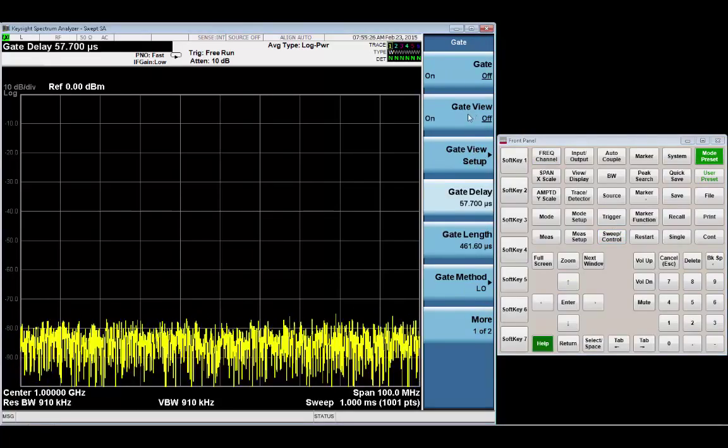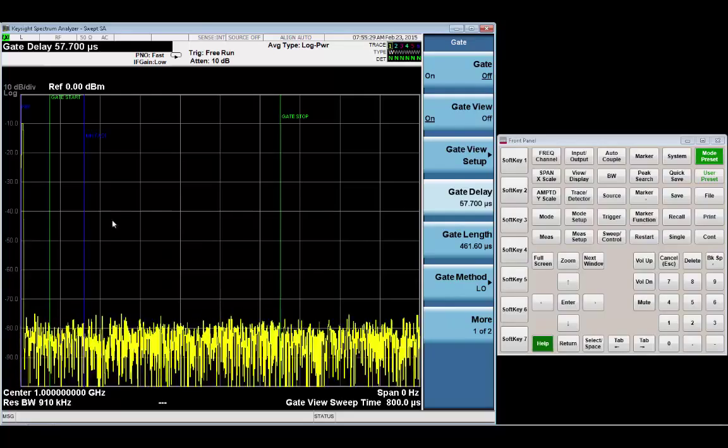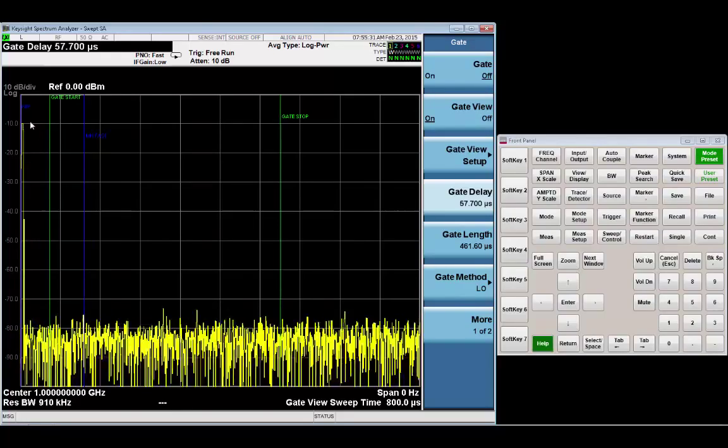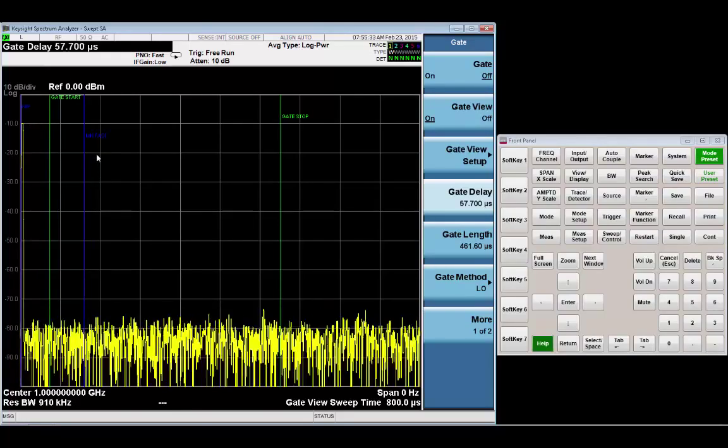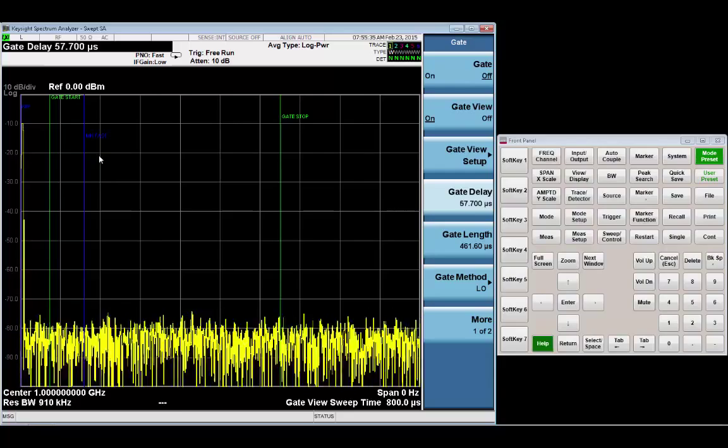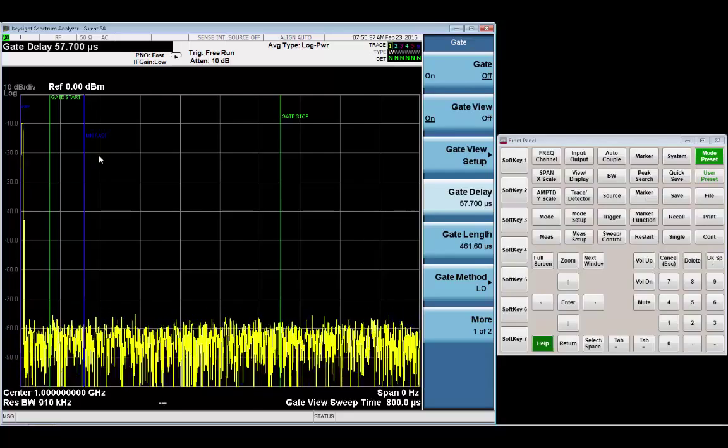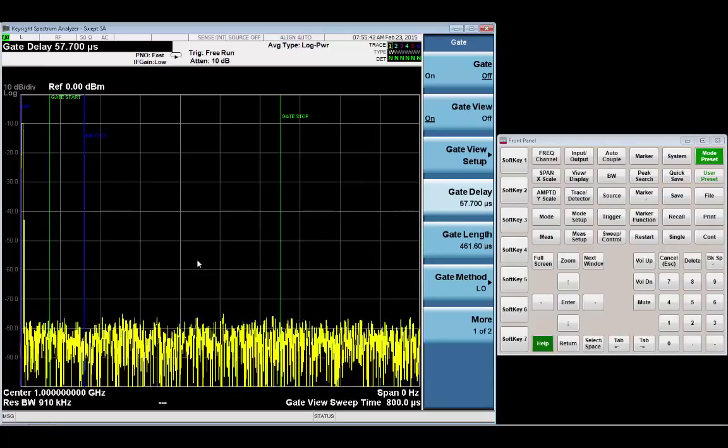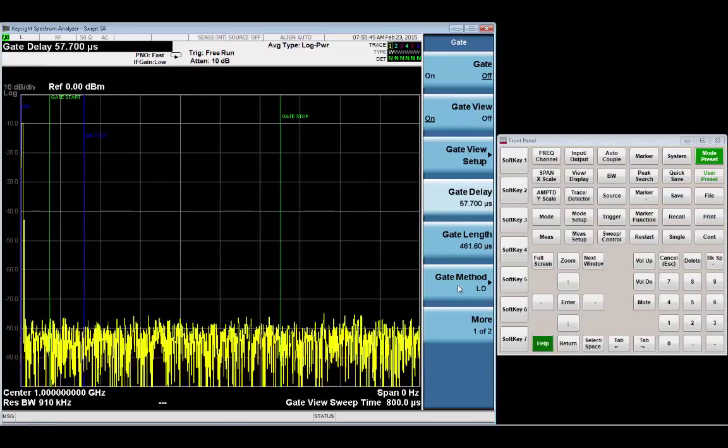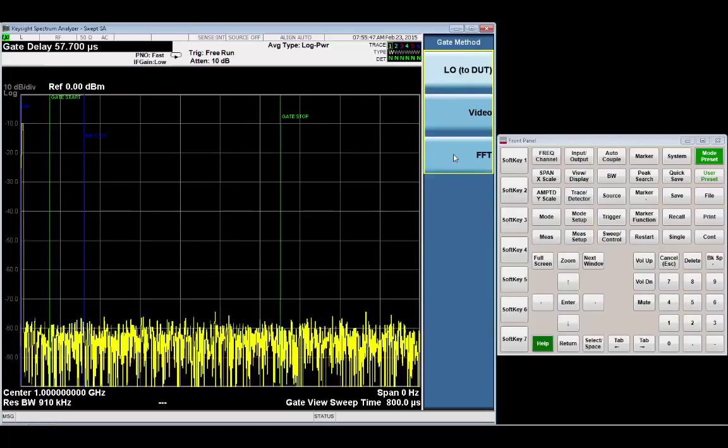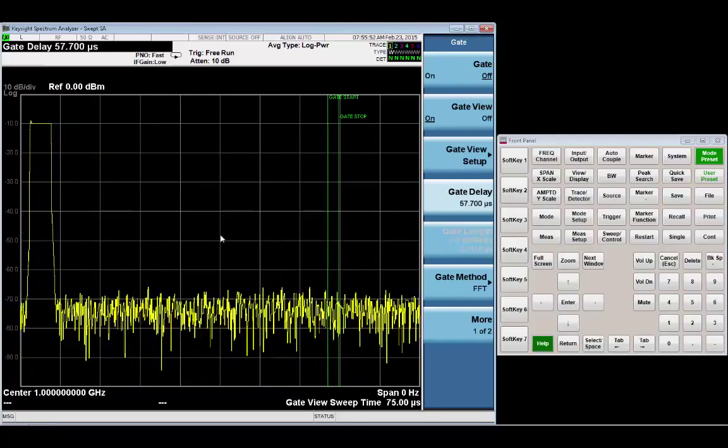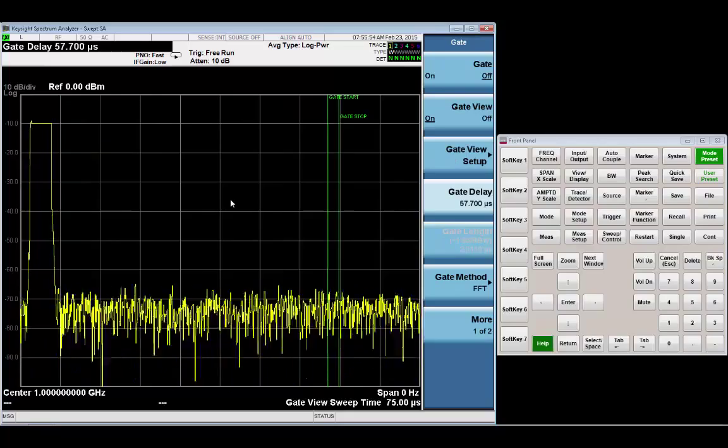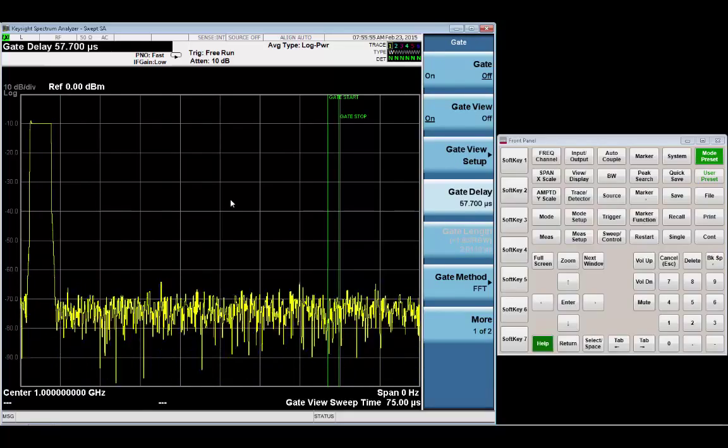And you'll notice that when I turn my gate view on, there's my blue reference line and my min fast time. And of course, the min fast time gives you the settling time of the LO that's needed. And now watch when I switch from gate method from LO to FFT, the blue reference line and the min fast line go away. Because it's FFT, we don't have to worry about the LO settling time.